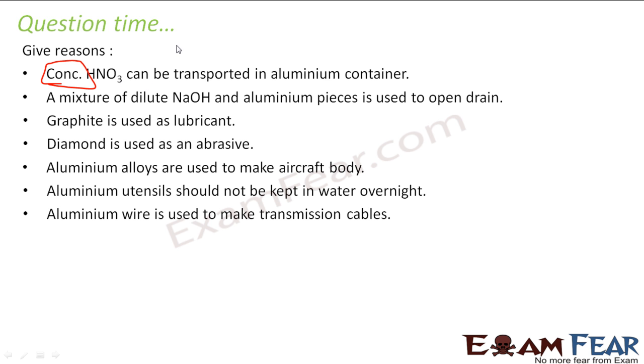It's called alumina. Let's write the reaction here: you have aluminum plus concentrated HNO3, you react, you get Al2O3 and you get nitrogen dioxide gas and water. This is a protective layer, with that the further reaction doesn't happen, and that's why you can transport concentrated nitric acid in the aluminum container.